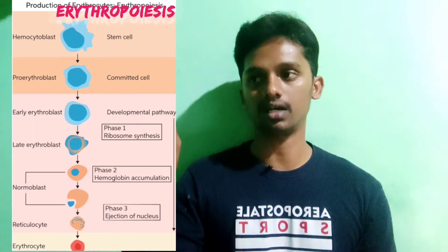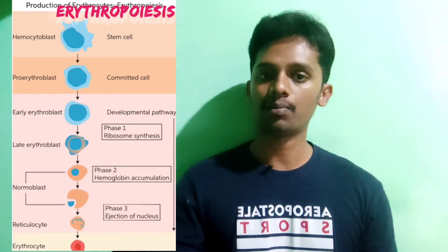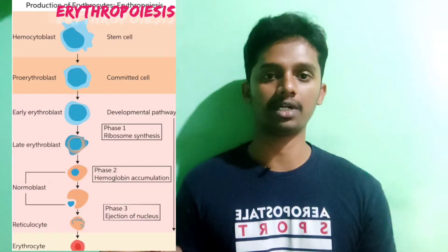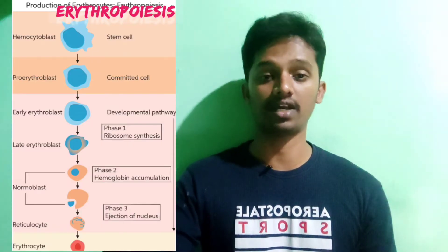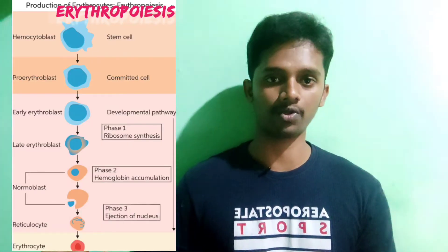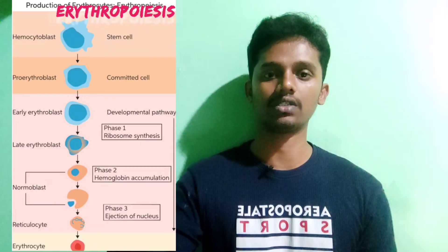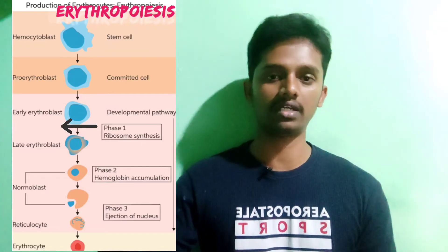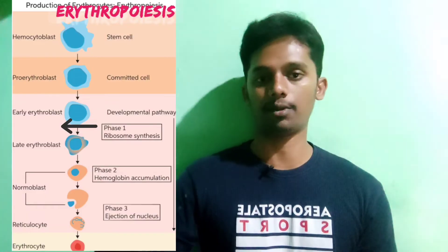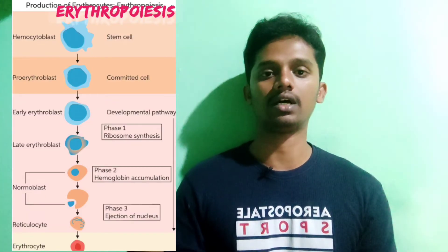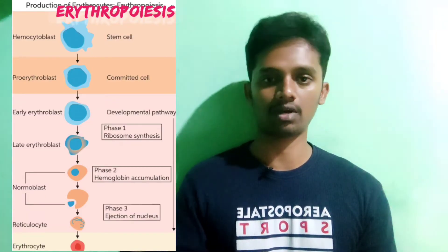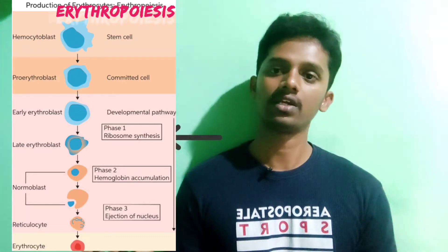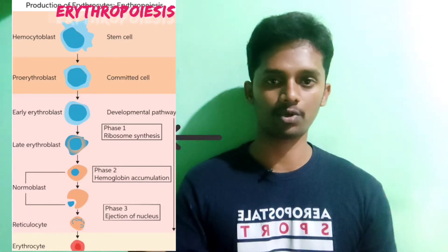In the red bone marrow, there is a stem cell called the hemocytoblast. From this, a cell called the pro-erythroblast is formed, which is the first step in RBC development. The pro-erythroblast then develops into the early erythroblast. At this phase, the cell synthesizes ribosomes and produces proteins.